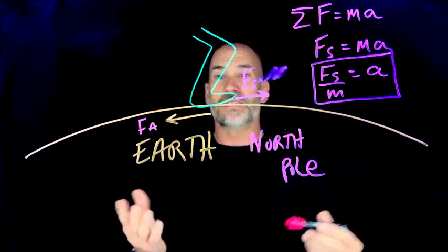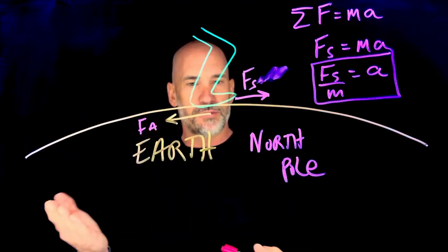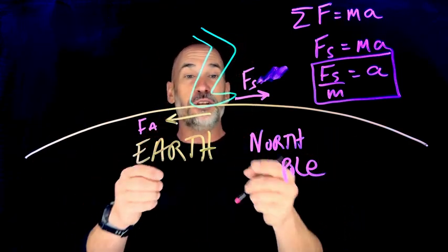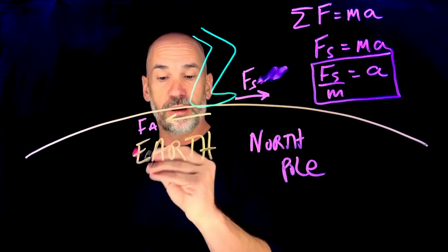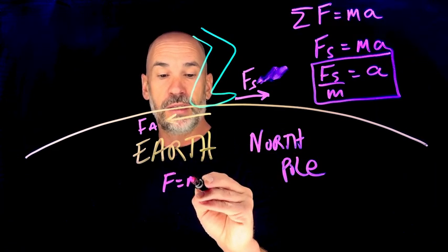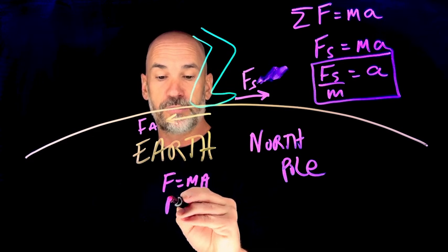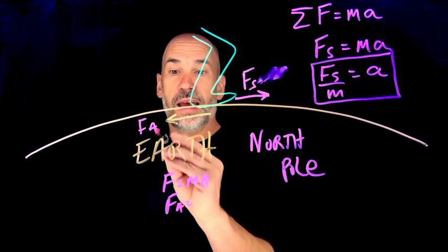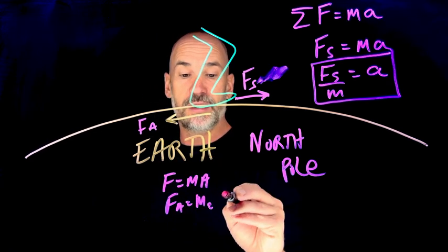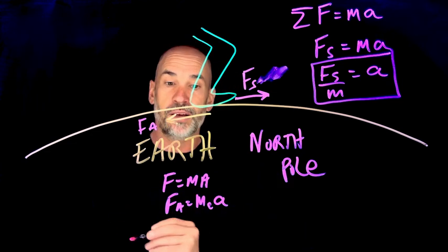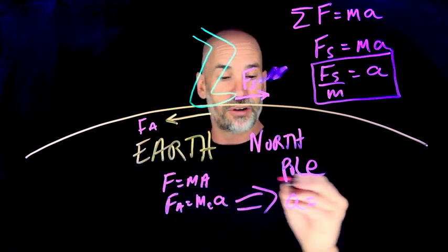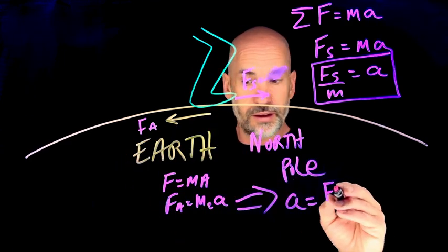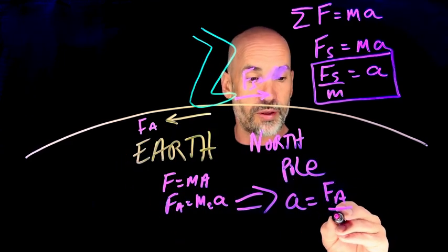Now you might be asking, but Scott, if you're applying a force to the earth, shouldn't the earth have an acceleration? If f equals ma, and the earth is feeling this applied force Fa, and the earth has some mass me, and there's an acceleration, shouldn't then that mean that the earth accelerates backward at f applied over the mass of the earth?